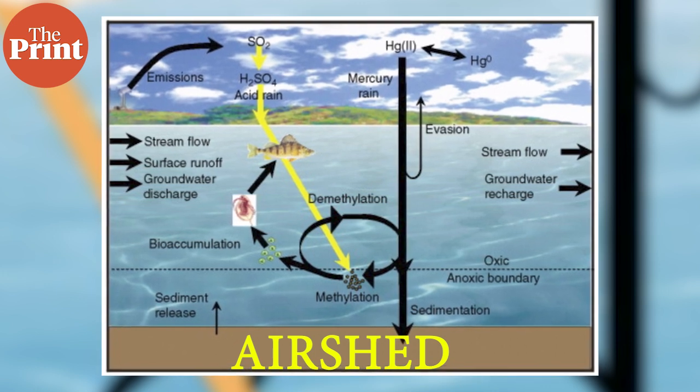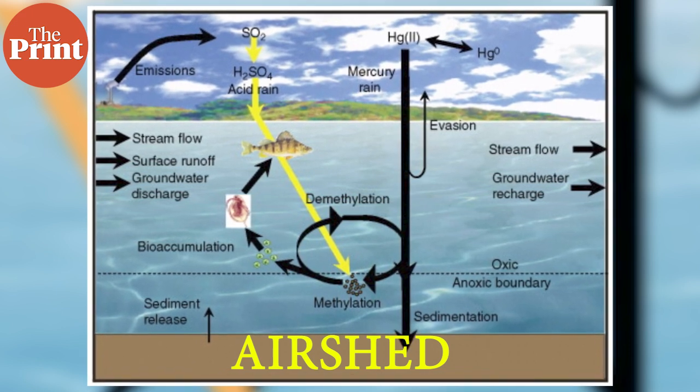Bihar government is already making use of much of this data. For example, we have developed the technology to figure out the airshed, which is a new approach to deal with the problem of air quality management, rather than designing air quality around administrative units like districts, cities, or divisions. Air pollution does not follow man-made boundaries — it has its own natural flow, which is called the airshed and micro airshed. Without sufficient data it is very difficult to figure out where the airshed will be. We have been able to figure out the actual geographical spread of airsheds and micro airsheds over Bihar using machine learning techniques, and this information is being used by Bihar.